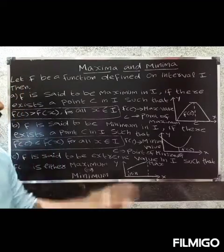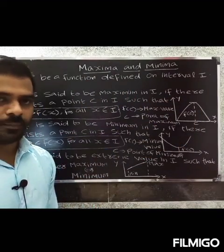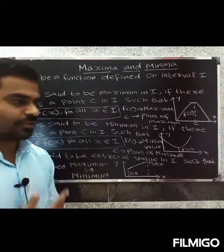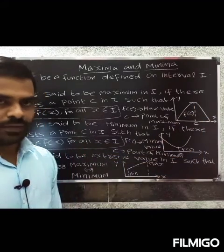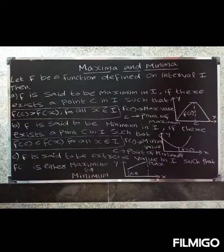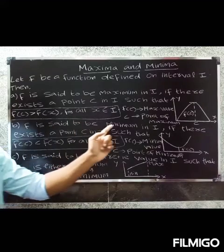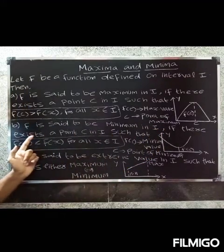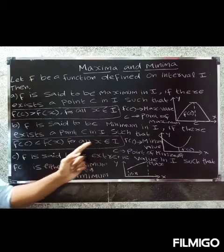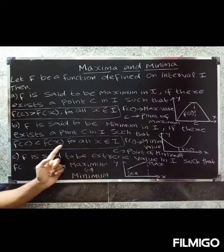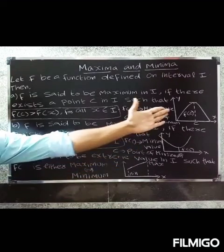So if you have the maximum points in the interval, those are your maximum points. Next, f is said to be minimum on interval I if there exists a point c in I such that f of c is less than f of x for all x belonging to I — this is just the opposite of maximum.